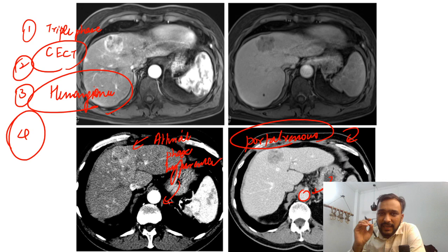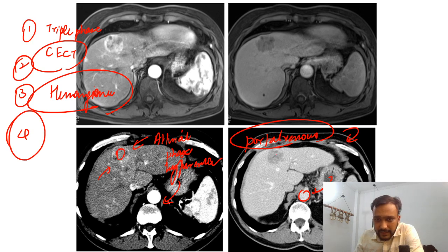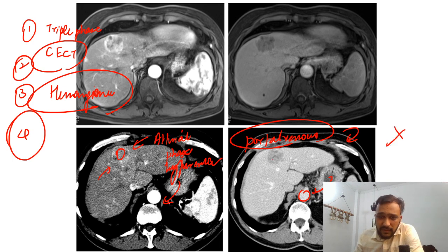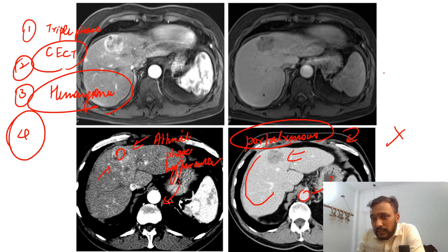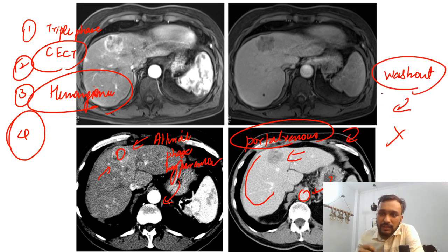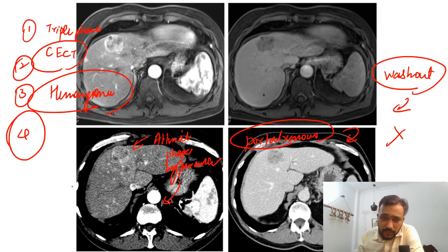Many people are confused about the term 'washout.' Normally people think that if we take the HU of this lesion in the portal venous phase and the attenuation decreases, we call it washout — but that is not correct. We compare the attenuation of this lesion to the rest of the liver parenchyma. Only if this lesion is appearing hypo-enhancing compared to the rest of the liver parenchyma do we call it portal venous phase washout. So a lesion showing arterial phase hyper-enhancement and portal venous phase washout — this is a case of hepatocellular carcinoma.